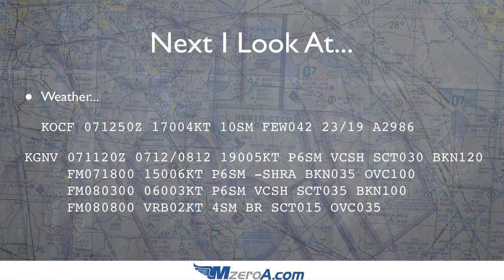The next thing I look at is weather. I literally just pulled these METARs now for the Ocala airport. Taking a look at everything — winds 170 at 4, 10 statute miles visibility. And here's where it gets interesting: few clouds at 4,200 feet. Well, that's nothing major. Remembering that odd people live in the east, I'm heading generally east, so I could fly at 3,500 feet. The odd part is the 3,000, then I add 500 to it.